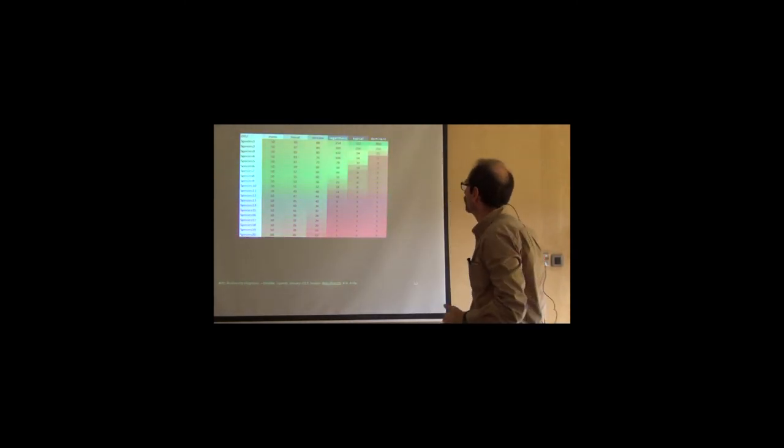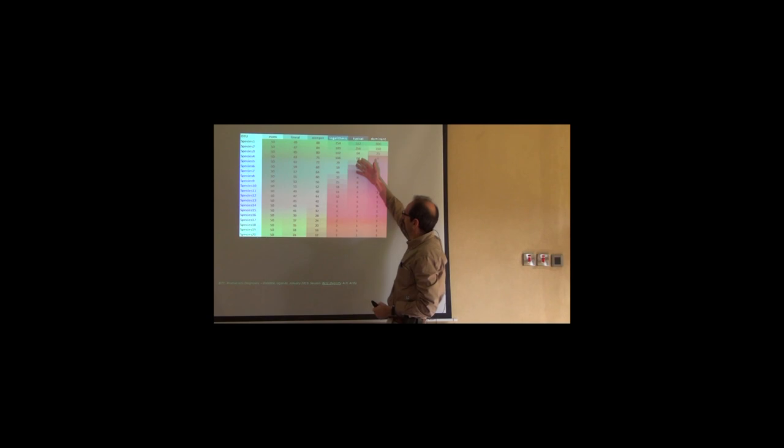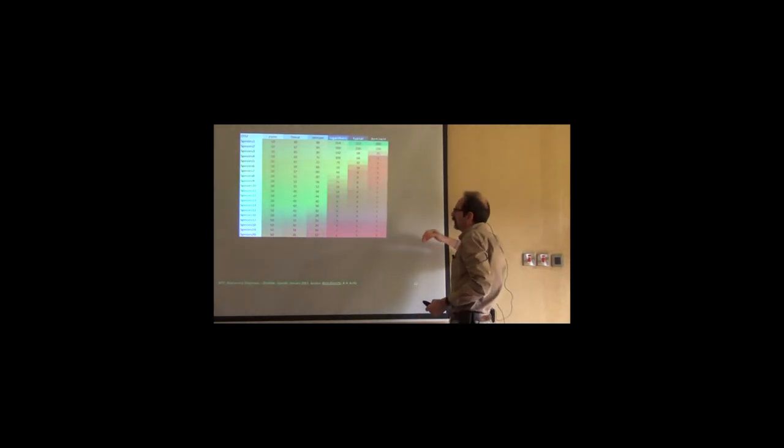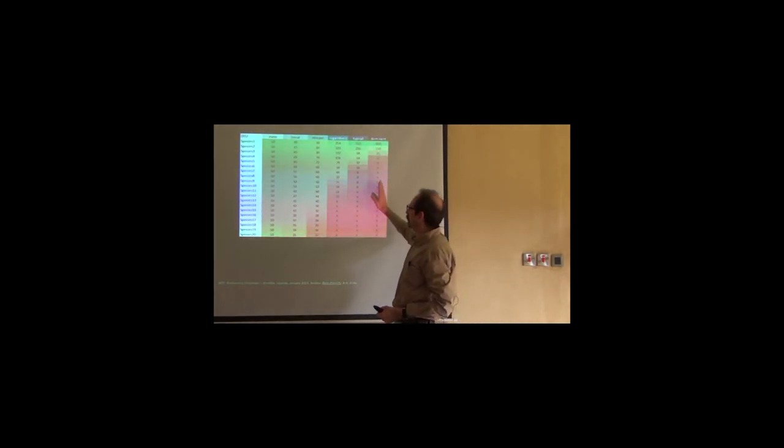The colors here are proportional to the number of individuals. And we have one sample here which I call the even sample, which has maximal evenness. All species, all 20 species, have exactly the same number of individuals, 50. Now we have this linear distribution here, in which all species have a different number of individuals, but they are related to each other because every species has one more individual than the species, the less abundant species, the immediately less abundant species.